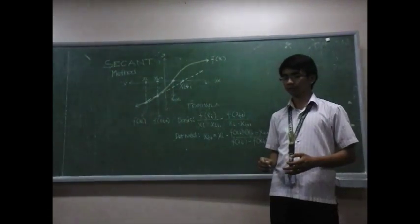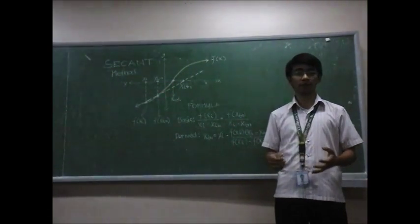While the false position method chooses the interval that has changed in sign, the secant method makes use of the latest values of x.